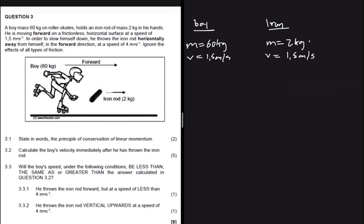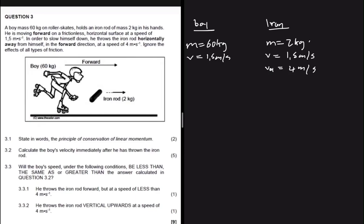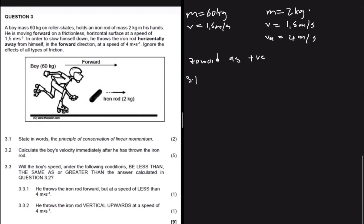In order to slow himself down, the boy throws the iron rod horizontally in the forward direction at a speed of 4 meters per second, so v_after equals 4 meters per second. We are told to ignore the effects of all types of friction. Since this interaction happens in the forward direction, we take forward as positive.